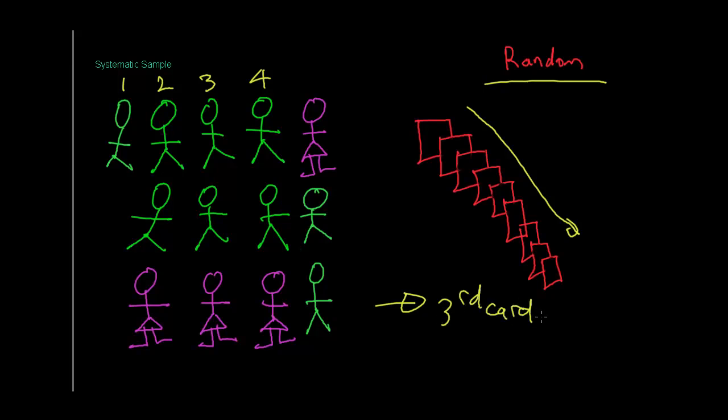And then you might keep on saying okay every fourth card from there you will get a sample. Which means that your first one is a random choice. Our random choice is the third one. And then from there we're going to say systematically we're going to pick every fourth person. So if we have a look at what it would look like in real life, we'd pick the third one to start with.